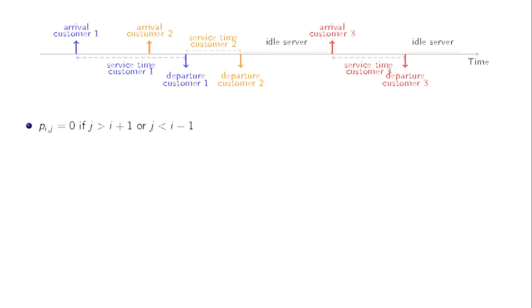This number changes only when a new customer arrives or when a service ends. Since there are no two simultaneous arrivals or simultaneous departures, the process can only increase or decrease by one unit at each change. This means p_{ij} is 0 if the gap between i and j is more than 2.